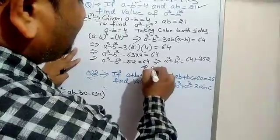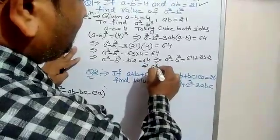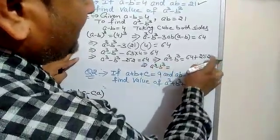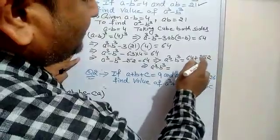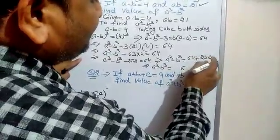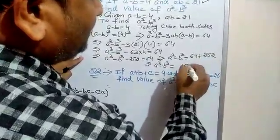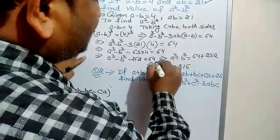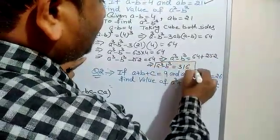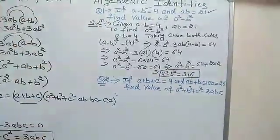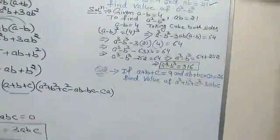So, a cube minus b cube equals 64 plus 252. Adding: 4 plus 2 is 6, 6 plus 5 is 11, carry 1, 2 plus 1 is 3. So the required value is 316. That is the required value of a cube minus b cube.